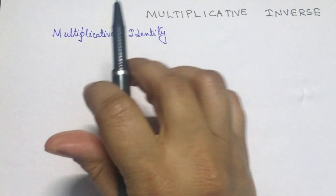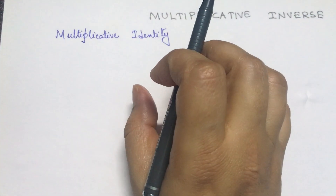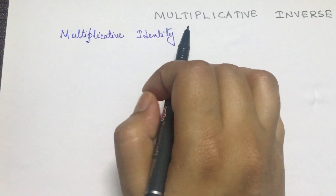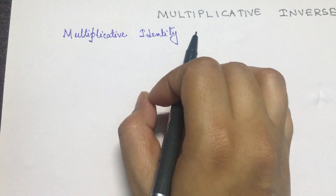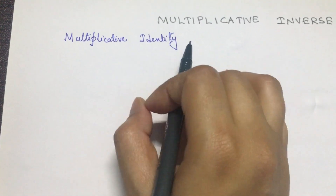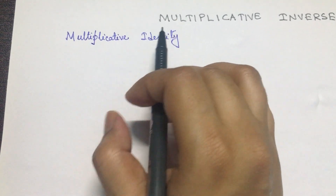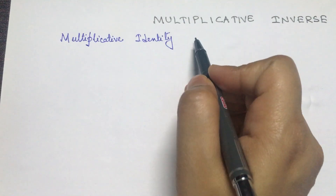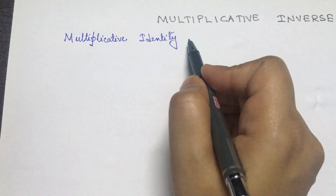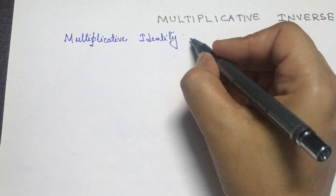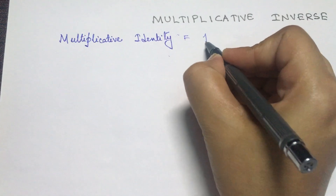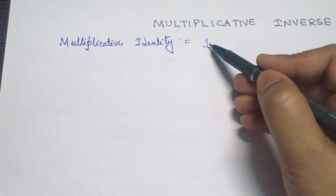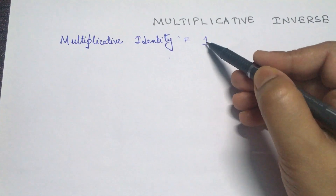Multiplicative identity is a non-zero field element of a Galois field such that if we multiply that particular field element with the other field elements, we will get back the other field elements itself. For a binary Galois field, the multiplicative identity is 1, because if we take the product of 1 with any other non-zero field element, we get back that element itself.